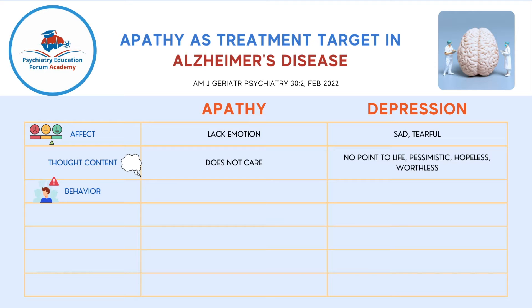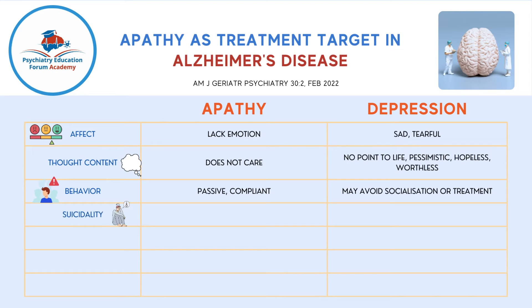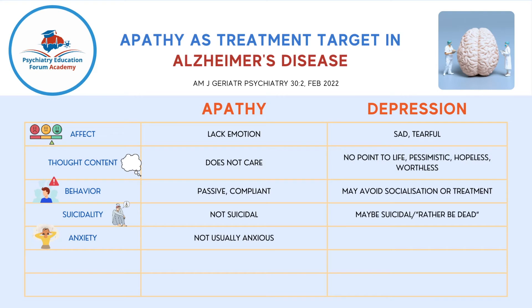Third is behavior. In apathy, a person is passive and compliant, but in depression a person may avoid socialization or even resist treatment compliance. Fourth is suicidality — a risk factor we must always evaluate. Mostly a person with apathy is not suicidal, but with depression, especially at high severity, there is a risk of suicidality.